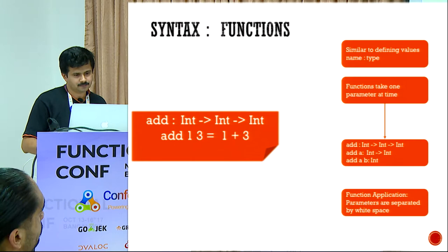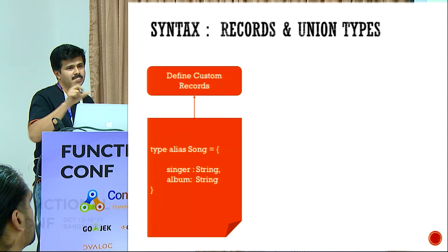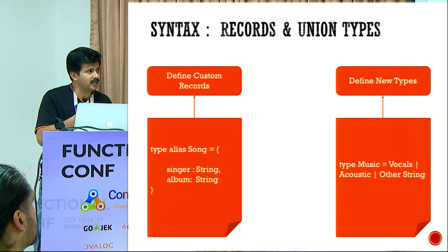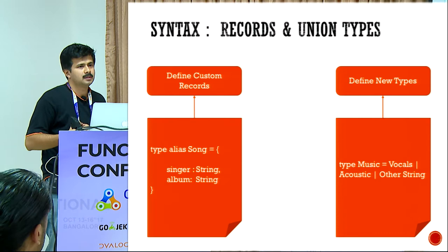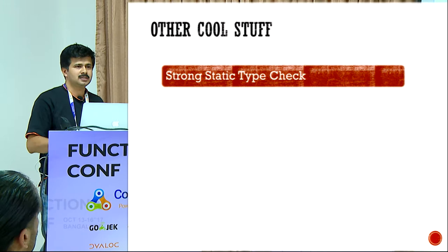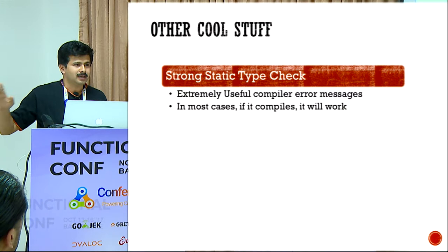And of course, records — you can create custom records, give a name for it. If you don't want to give a name, you always have to use that structure within curly braces. So it's a good idea to give it an alias. You can also define your own types — called union types. In this case your type is `Music`, so it's `Vocals` or `Acoustic` or `Other`, and `String` is a type parameter, meaning `Other` holds a string. There's also strong static type checking — for pure JavaScript developers it's a new thing, but for other statically typed language developers it's familiar.